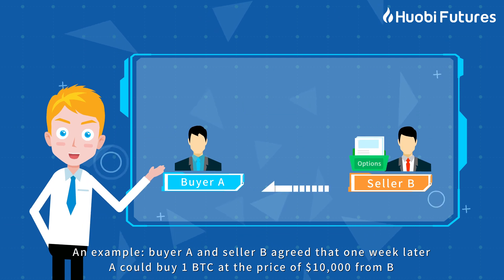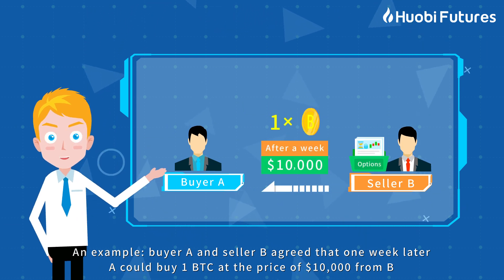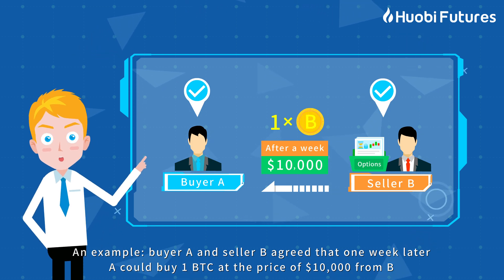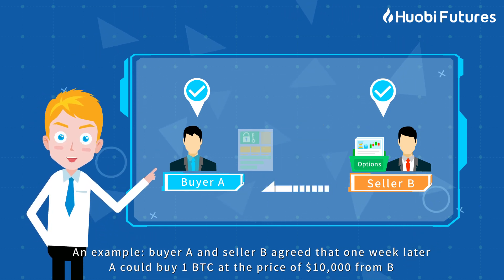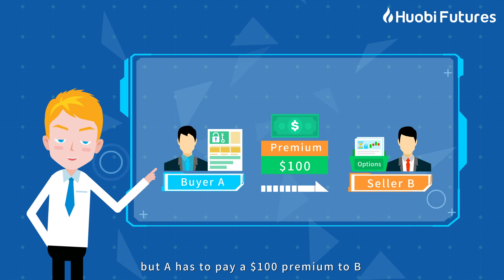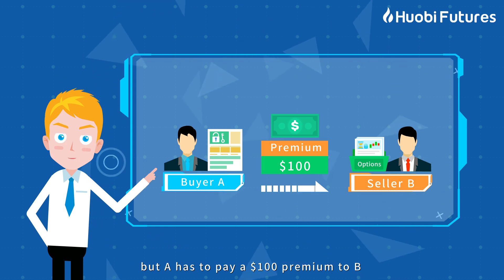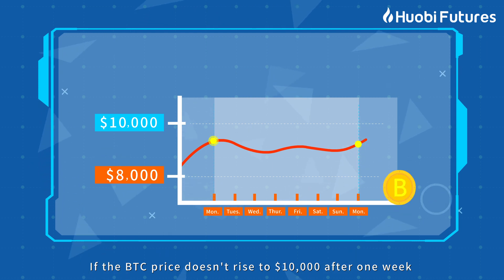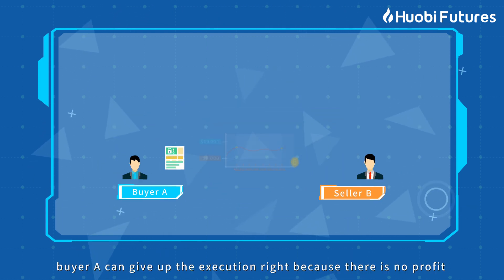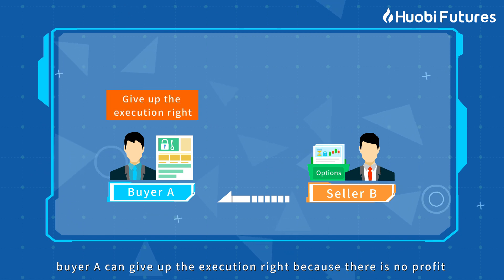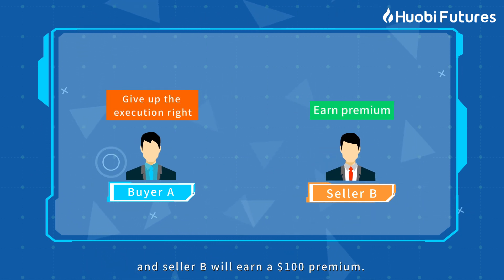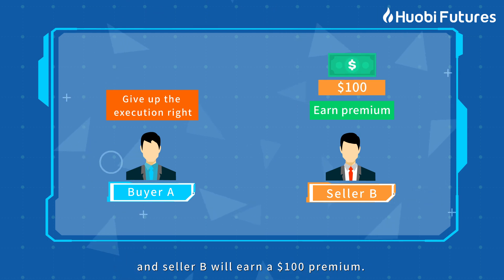An example: buyer A and seller B agreed that one week later, A could buy one BTC at the price of $10,000 from B, but A has to pay a $100 premium to B. If the BTC price doesn't rise to $10,000 after one week, buyer A can give up the execution right because there's no profit, and seller B will earn a $100 premium.